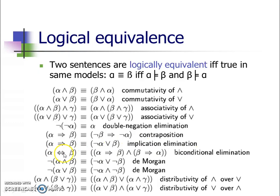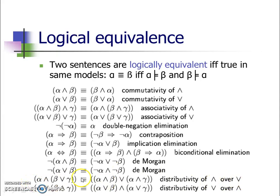Also, whenever you have a biconditional implication, alpha double-implies beta is equivalent to alpha implies beta AND beta implies alpha. This can be further broken down with the and-elimination rule into two separate sentences: alpha implies beta, and beta implies alpha. Also, De Morgan's law is applicable: negation of (alpha AND beta) becomes negation of alpha OR negation of beta. Similarly, applying De Morgan's law over OR gives negation of alpha AND negation of beta. The distributivity of AND over OR and OR over AND are also given as rules. So the statement alpha OR (beta AND gamma) is equivalent to (alpha OR beta) AND (alpha OR gamma).